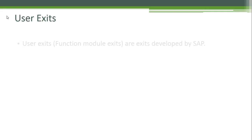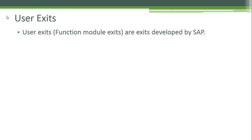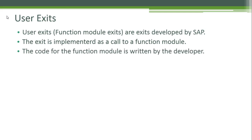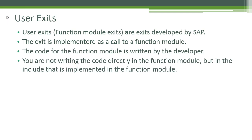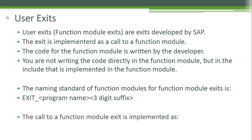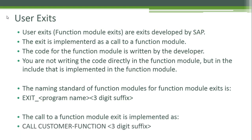User exits, also called function module exits, are exits developed by SAP. The exit is implemented as a call to a function module, and the code is written by the developer — not directly in the function module, but in an include implemented within it. The naming standard for function module exits is: EXIT_ followed by the program name and a three-digit suffix. The call is implemented as 'call customer function' followed by the three-digit suffix.